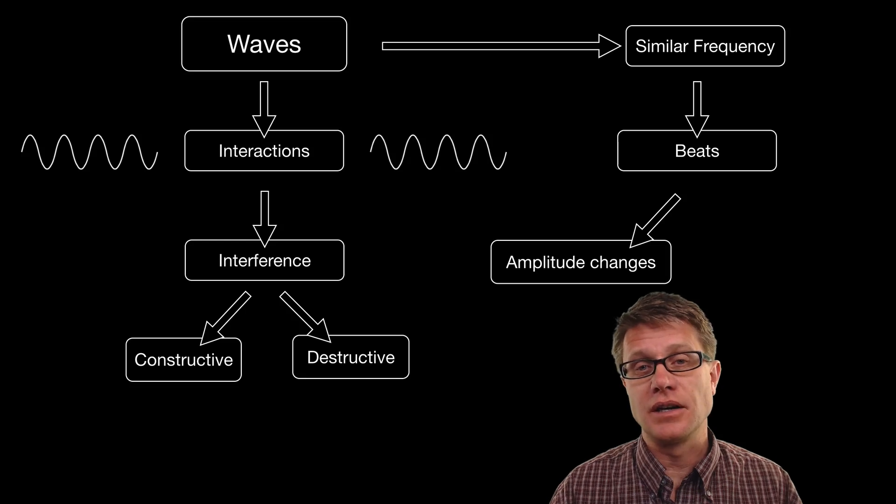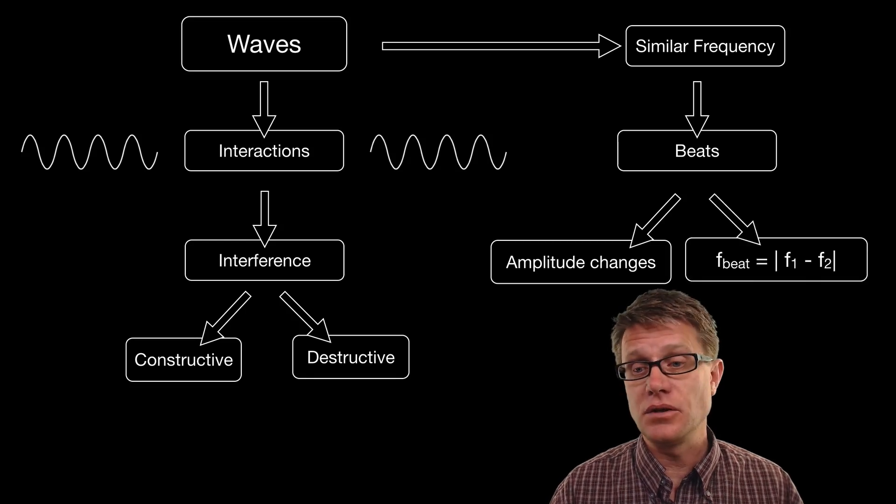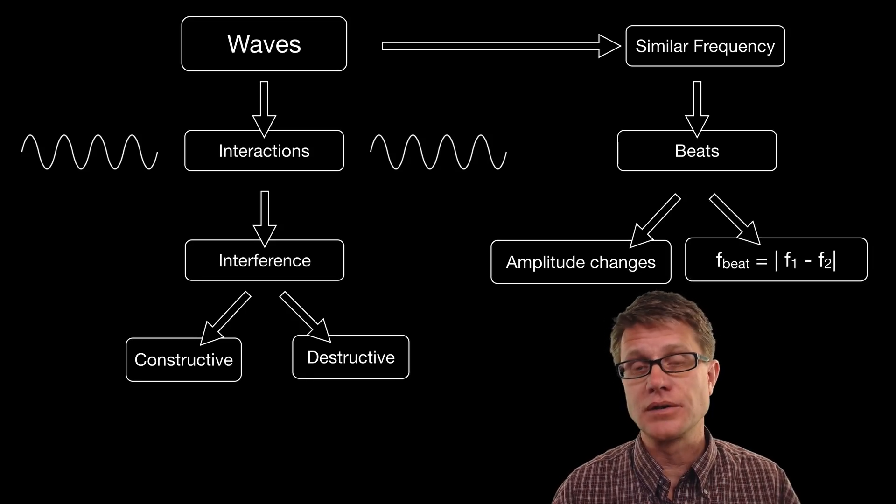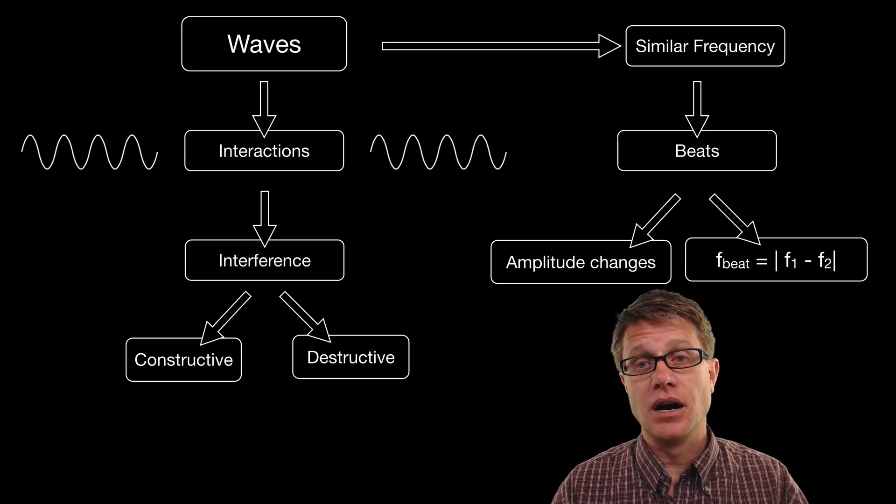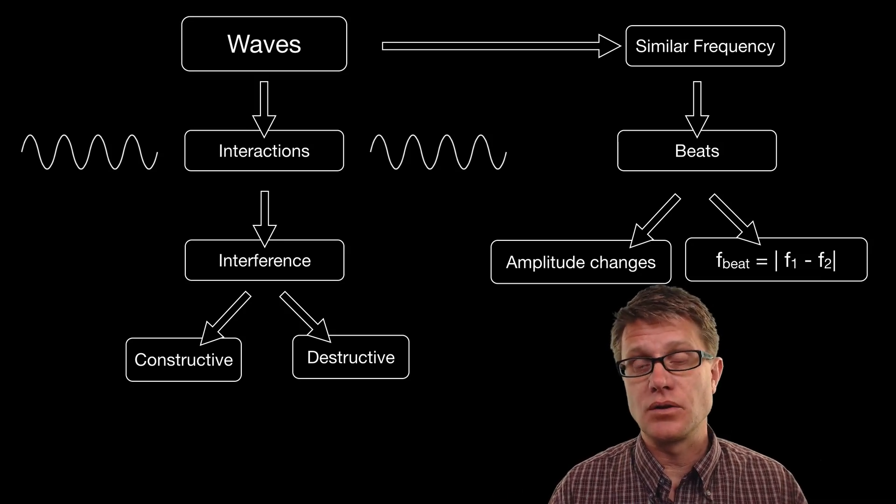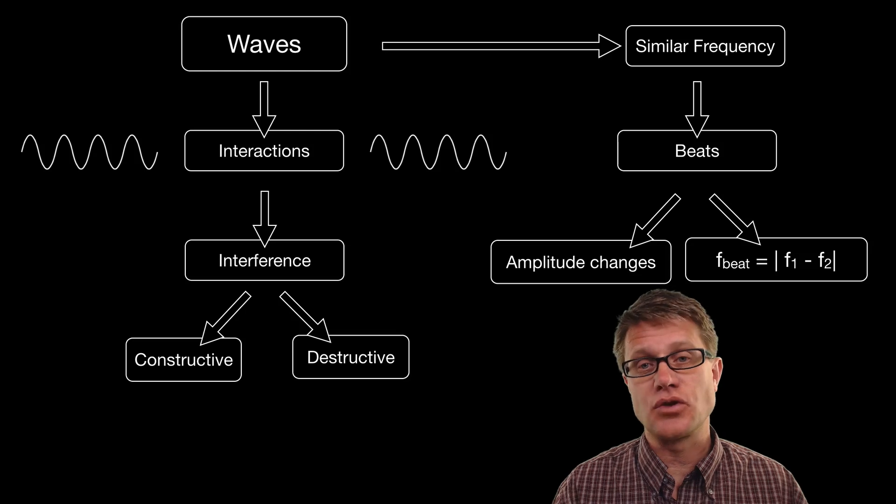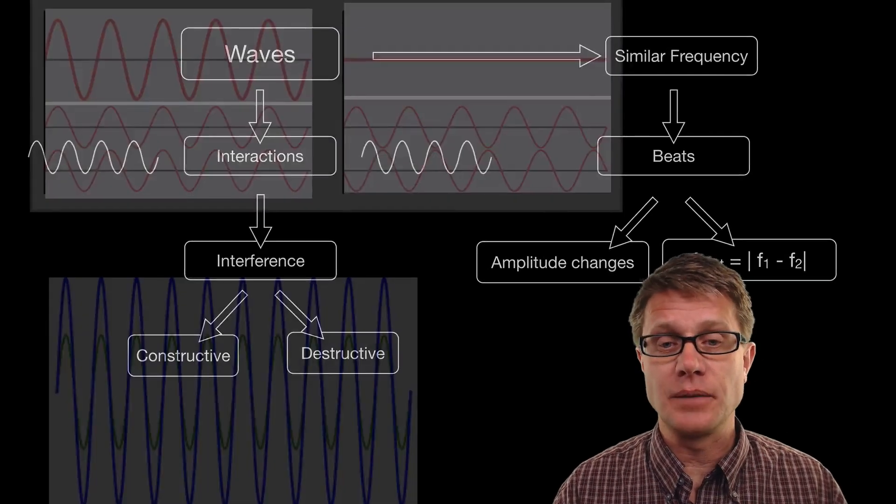Now it is really easy to calculate the frequency of the beats. All you do is the frequency of the beat equals the absolute value of the difference between the two frequencies. So if I know frequency 1 and 2, I simply subtract them and it is the absolute value of those.